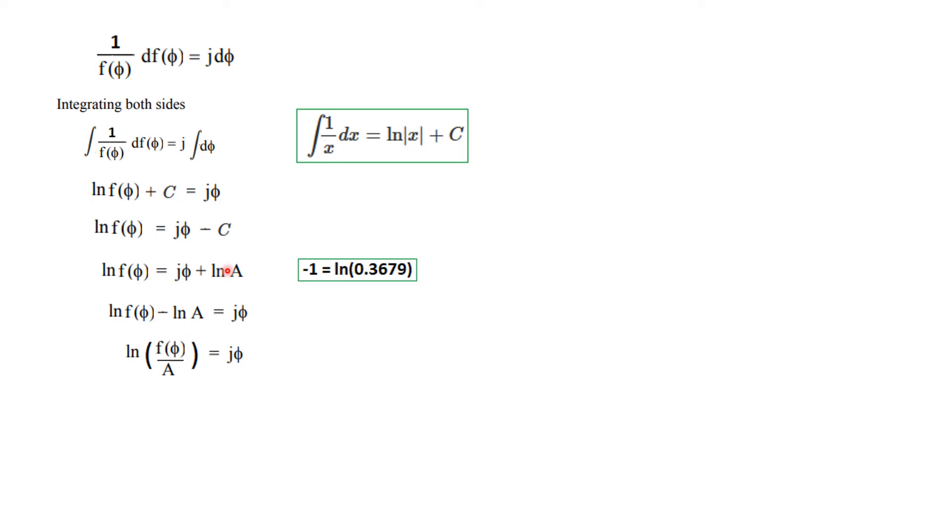Now from here we take ln(A) to the left hand side. And we know that ln(f) minus ln(A) can be written as ln of the fraction, that is f(φ) divided by A, and this is equal to jφ.